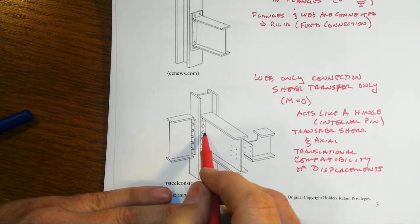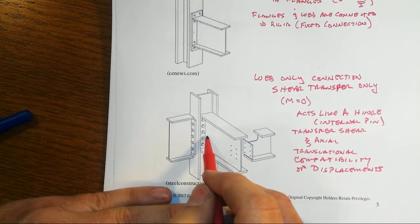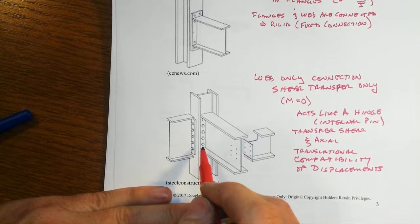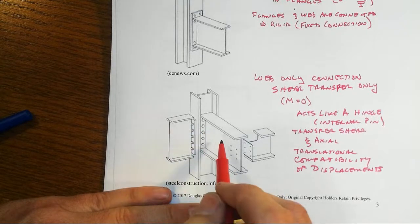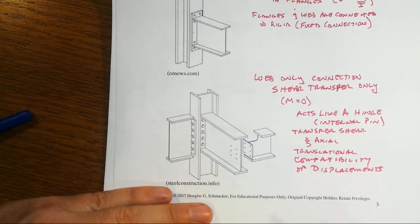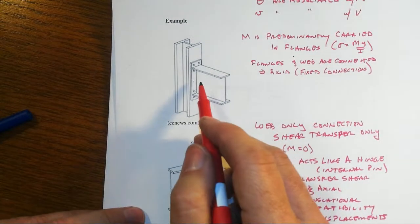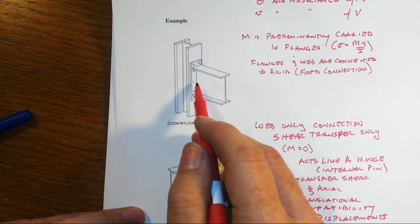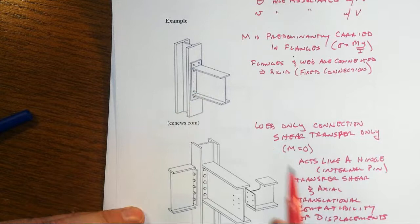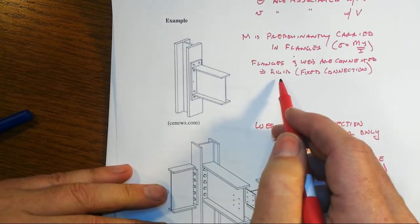Same thing over here, if the beam wants to go up and down, the column is going to have to go up and down or sideways along with that, but the end of the beam can rotate without also causing the column to rotate. Unlike what we had up here, that if this beam wants to rotate, then the end of the column will have to rotate because this is a rigid.